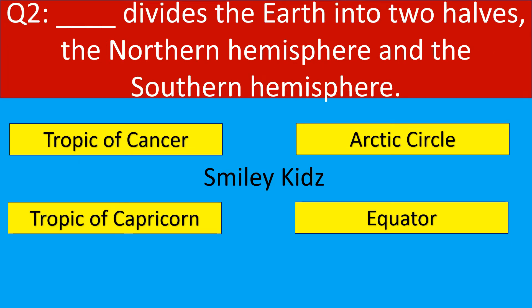Question number 2. What divides the Earth into two halves — the Northern Hemisphere and the Southern Hemisphere? Your options are Tropic of Cancer, Arctic Circle, Tropic of Capricorn, Equator.